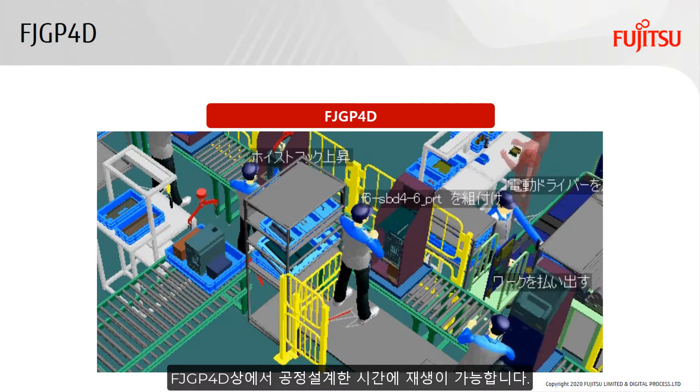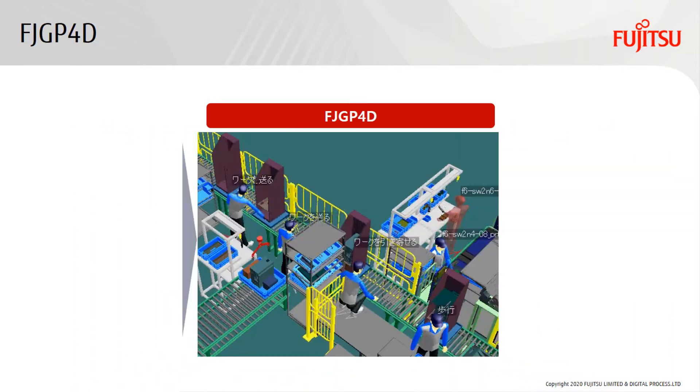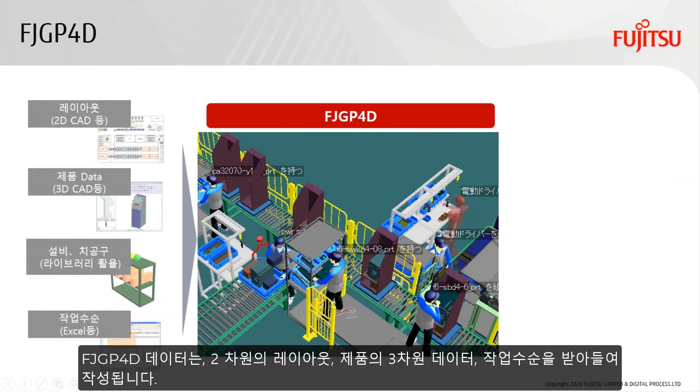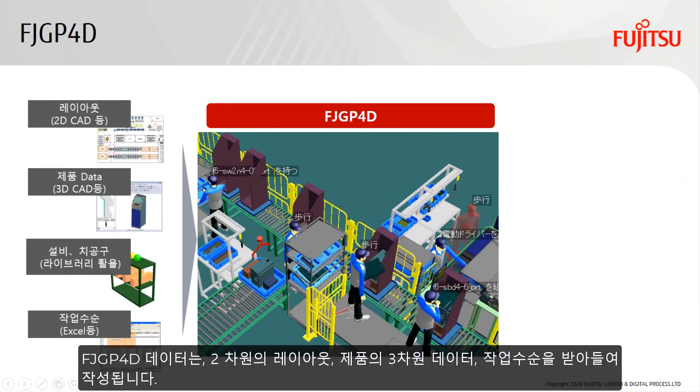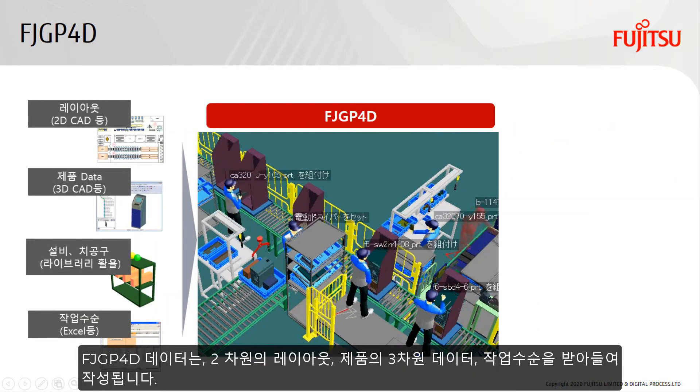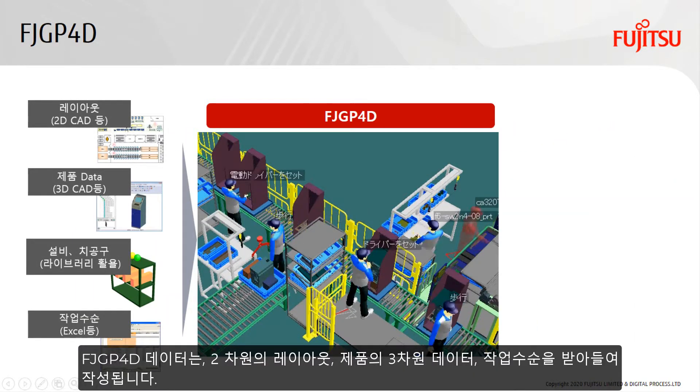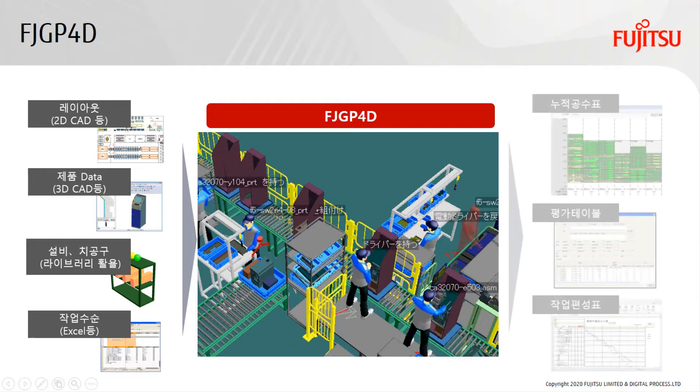FJGP4D creates simulation data by importing 2D factory layout drawings, 3D product data, and work procedure information.